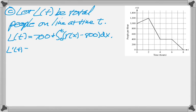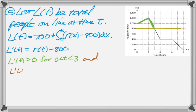So I'm going to find L prime of T using the second fundamental theorem, which I actually already knew from the previous problem. And I've added line 800 again. And I need to reason about this. So L prime of T is definitely greater than 0 between 0 and 3 because R of T is greater than 800, which you can see in the picture. And by the same logic, L of T is less than 0 for 3 to 8.